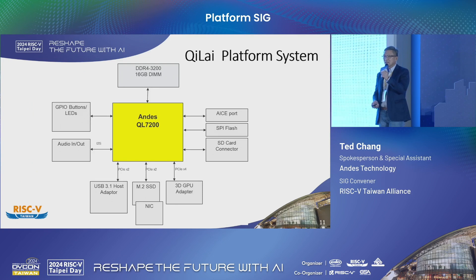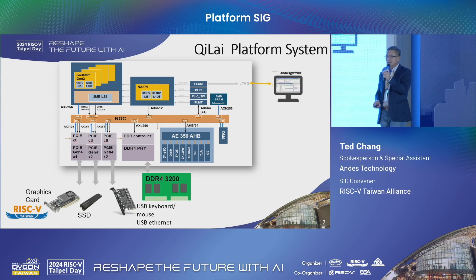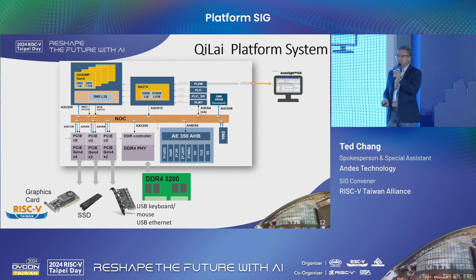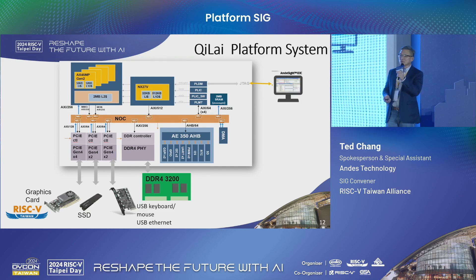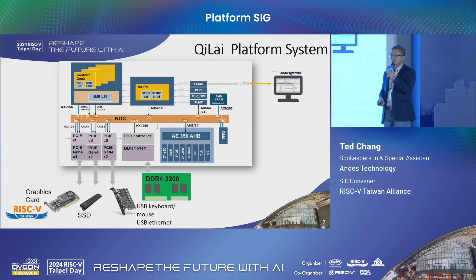This is the Platform system architecture — just for your reference, the chip name is QL7200. This is another system diagram for your reference. Actually, we have a live demo next door, so you can visit our booth to see the real demo. This demo is equipped with a graphics card, SSD, and USB hub to do some operations and demos.